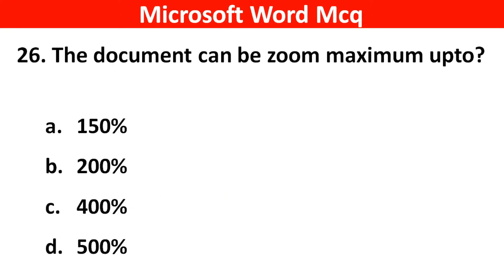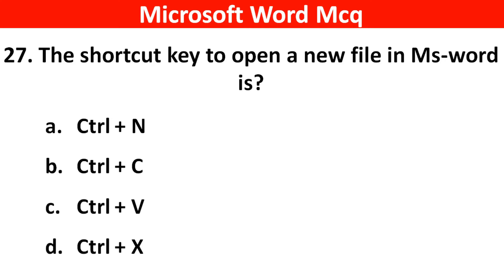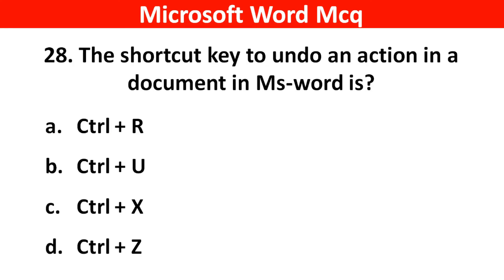Next question: The document can be zoomed maximum up to? Right answer is Option D: 500%. Next question: The shortcut key to open a new file in MS Word is? Right answer is Option A: Ctrl plus N. Next question: The shortcut key to undo an action in a document in MS Word is? Right answer is Option D: Ctrl plus Z.